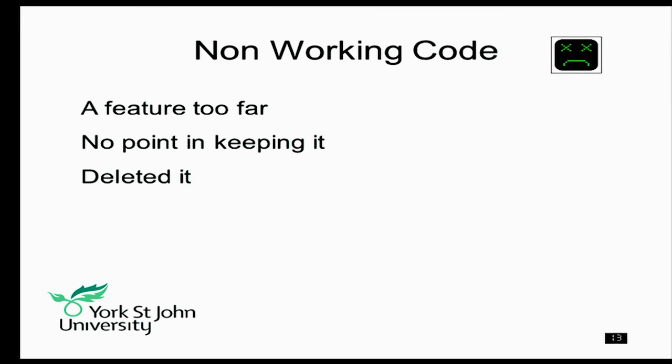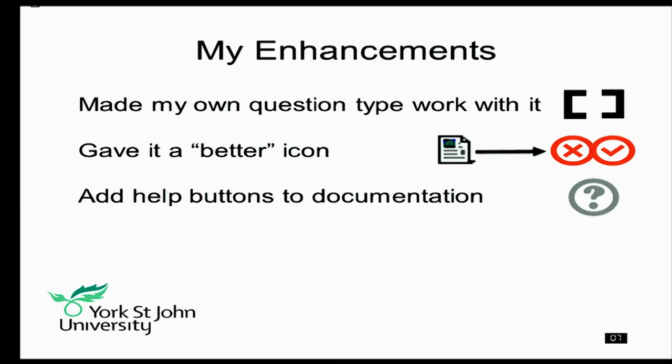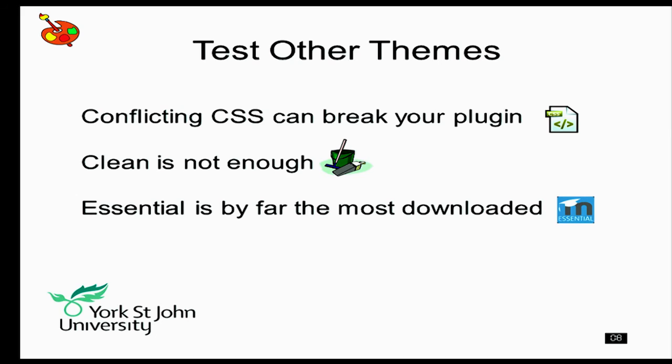I discovered there was some non-working code from when this had been developed — they'd been working on something and it had been a feature too far, so I just deleted it. It's in GitHub, so the code's still there. I did some tiny improvements: most importantly, my own question type works in it now. I gave it a better icon and added some help buttons to documentation and slightly improved the wiki documentation. Generic advice when updating a plugin: test with other themes. Don't just test with the default clean theme or your own home-brewed one — I recommend testing with Essential, because it's the most downloaded theme.